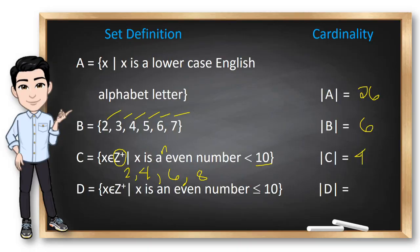How about this last set? x is an element of positive integers again such that x is an even number less than or equal to 10. Similar to the previous one, but this time, 10 is included in the set. So, the answer here is 5. Good job.